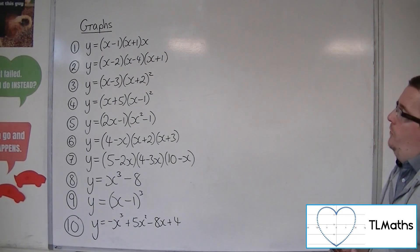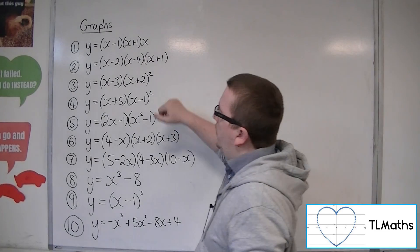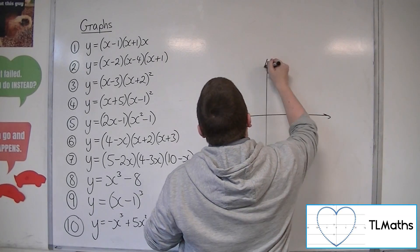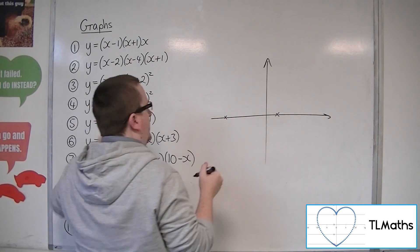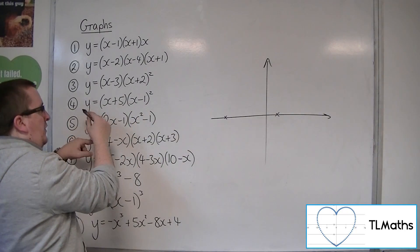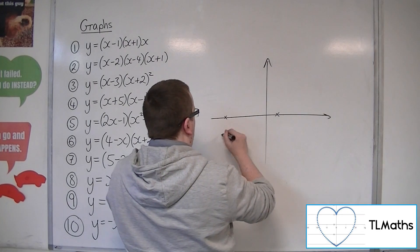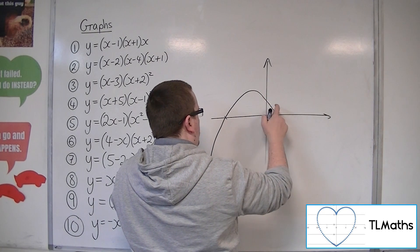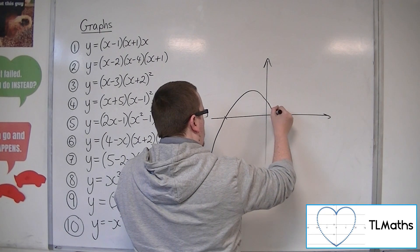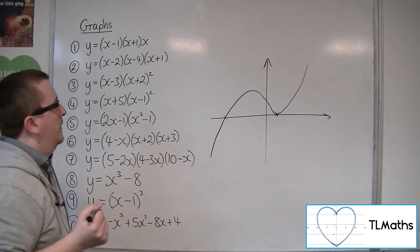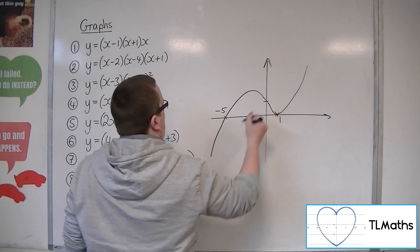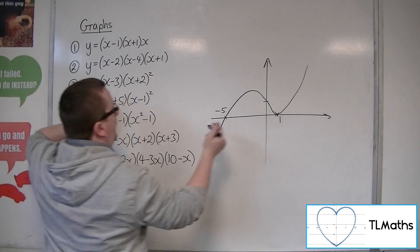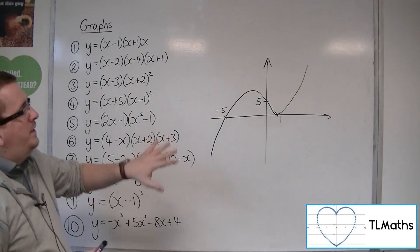With number 4, we have y is equal to x plus 5 times x minus 1 squared — so again we've got a repeated factor and a repeated root at 1, plus a root at minus 5. We've got a positive x-cubed, so we're starting the bottom left. We cross through minus 5, come back down and round, and just brush the x-axis at 1. Crossing the y-axis: 5 times minus 1 times minus 1 is 5.